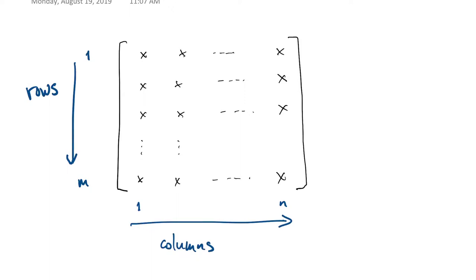A matrix is a rectangular array of numbers. We number the rows from 1 to m, starting at the upper left, and we number the columns starting at the upper left from 1 to n.